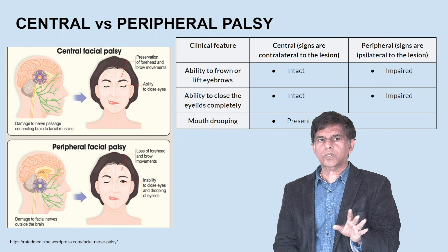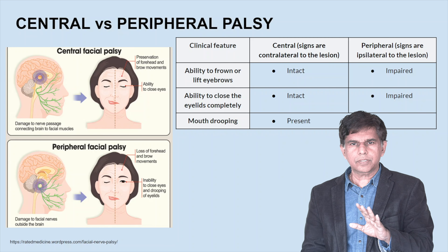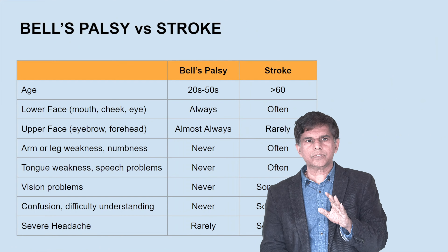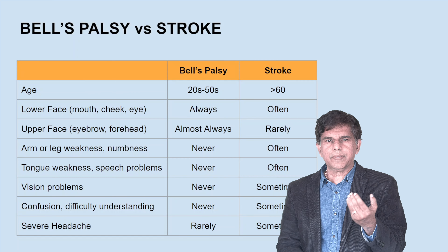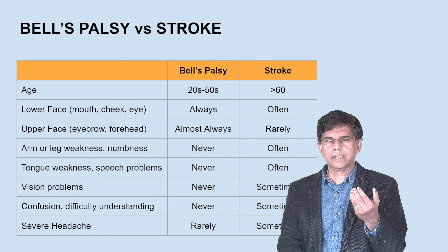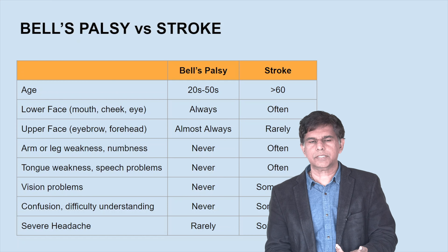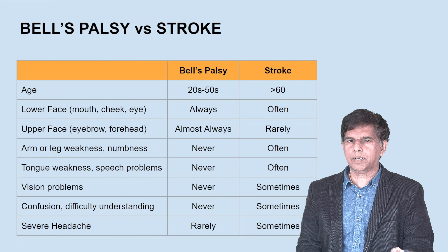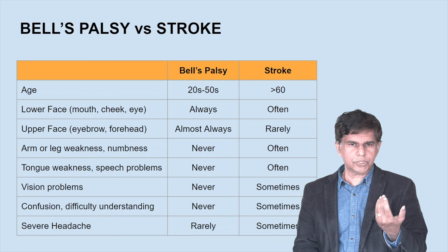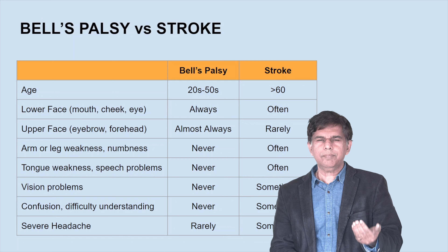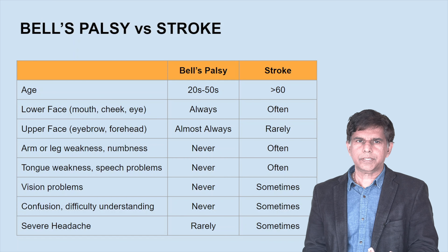Bell's palsy versus stroke — major differences: age 20 to 50 for Bell's palsy, whereas stroke is usually greater than 60. Bell's palsy affects the upper face, lower face, mouth, cheek, and eye — always. Arm or leg weakness never happens in Bell's palsy because it is a peripheral lesion. Tongue weakness and face problems, vision problems, confusion, and difficulty understanding never happen. Severe headache sometimes occurs in Bell's palsy but doesn't happen all the time.